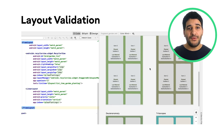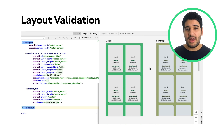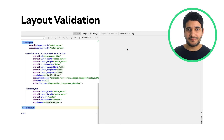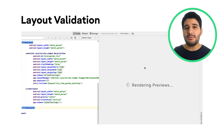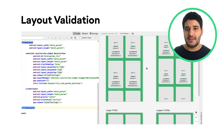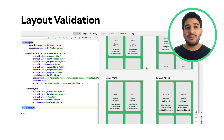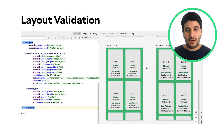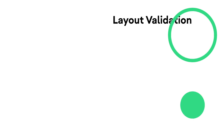Colorblind, where you can preview your app using simulations of common types of color blindness, and font sizes, where you can preview your app using a variety of font sizes. To switch between these configuration sets, select from the drop-down menu at the top of the layout validation window.